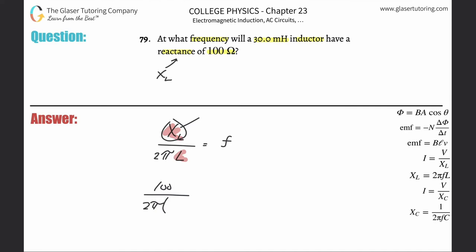So simply take 30 multiplied by 10 to the minus 3. Here we go—it's basically going to be 100 divided by, in parentheses, 2π times 30 times 10 to the minus 3.